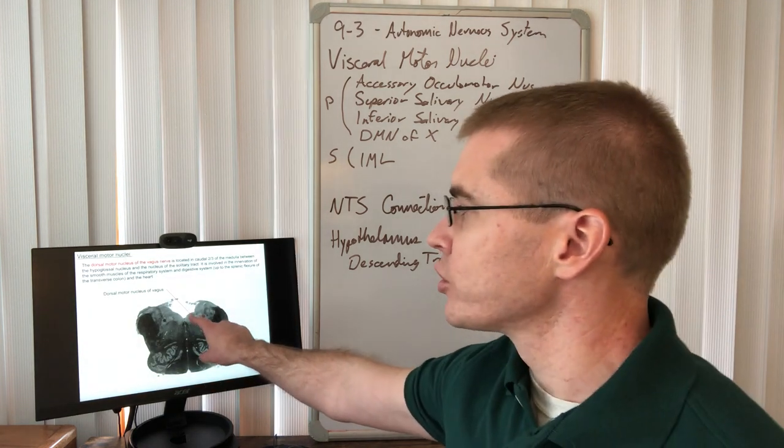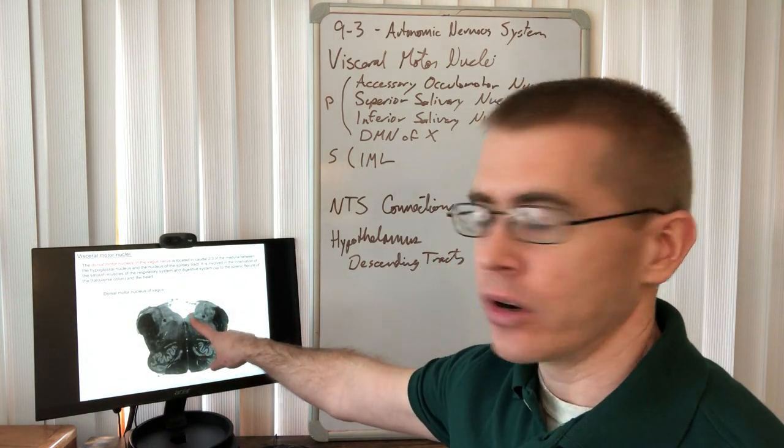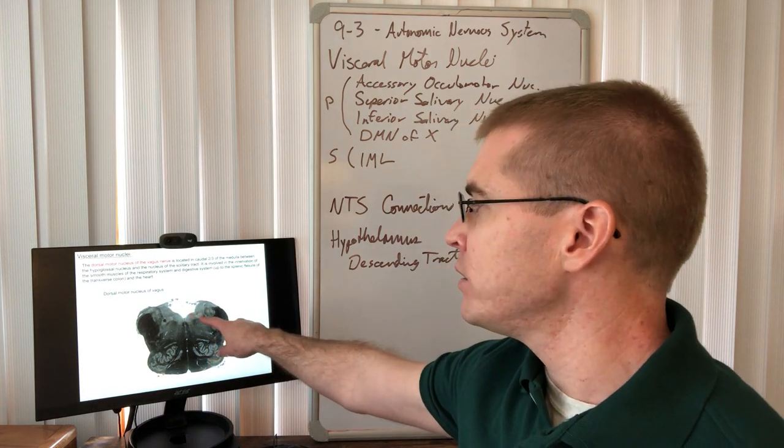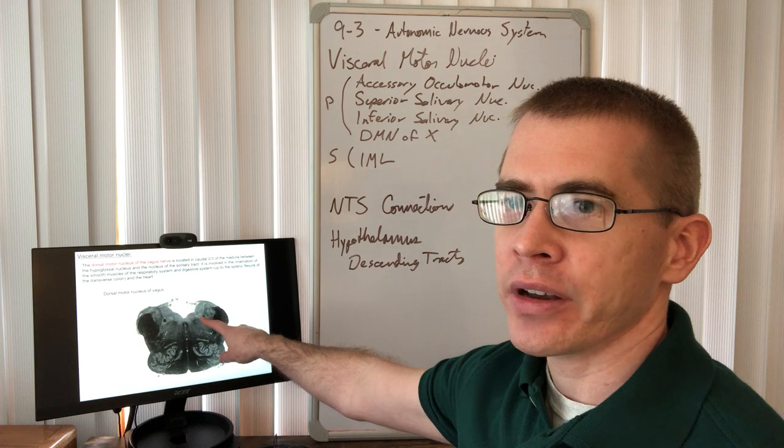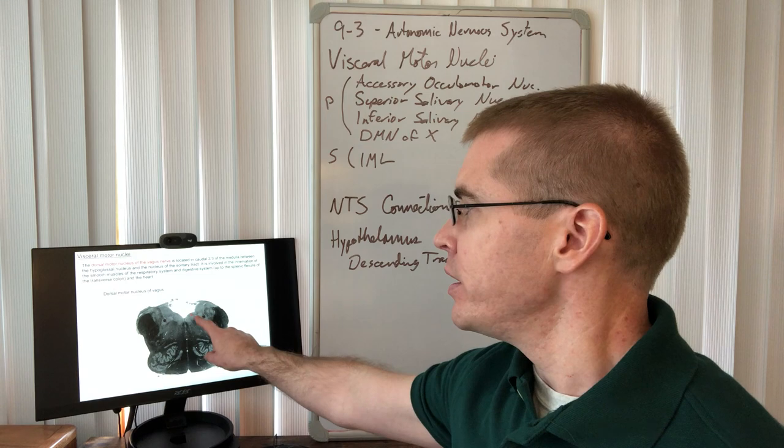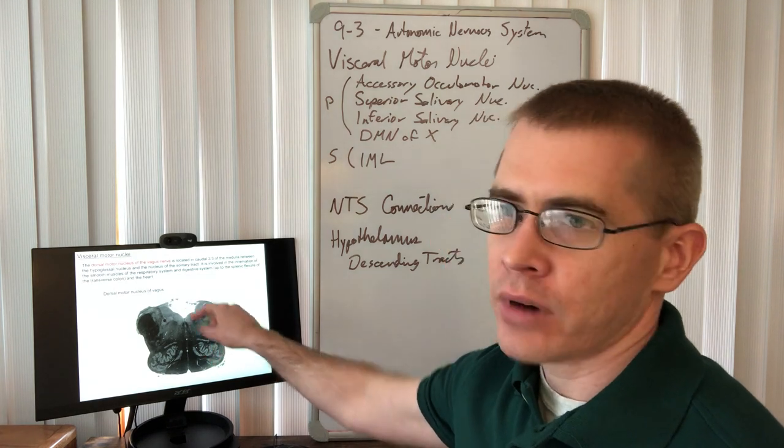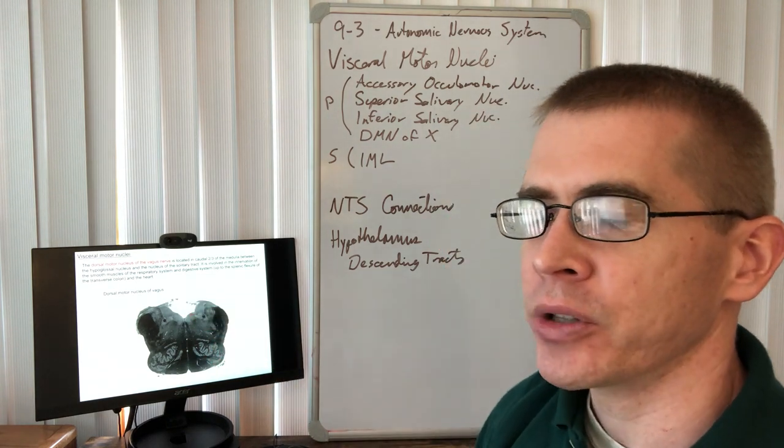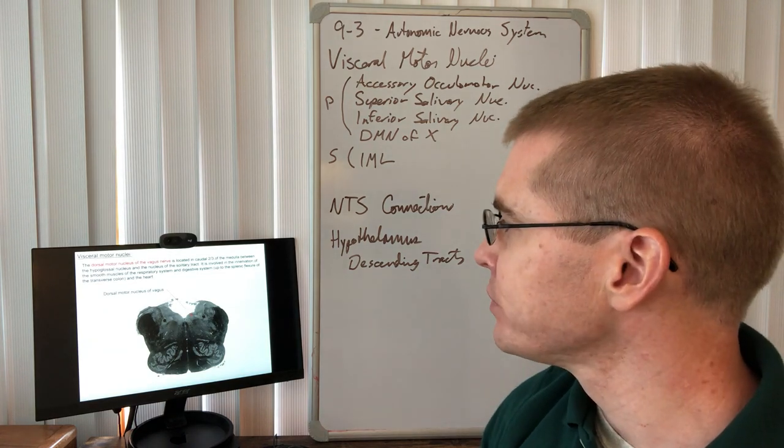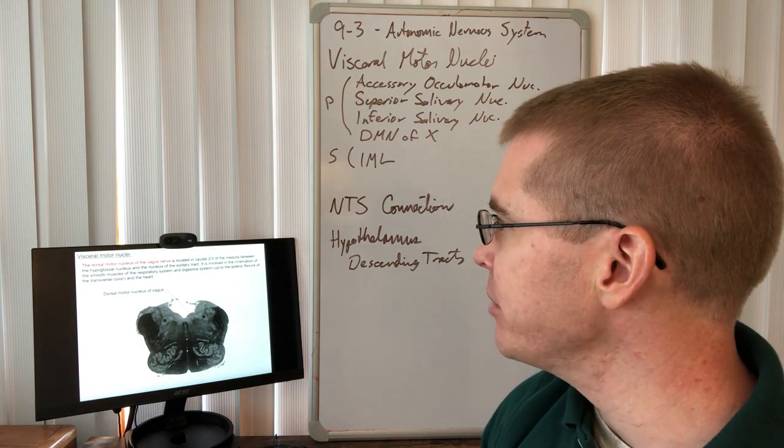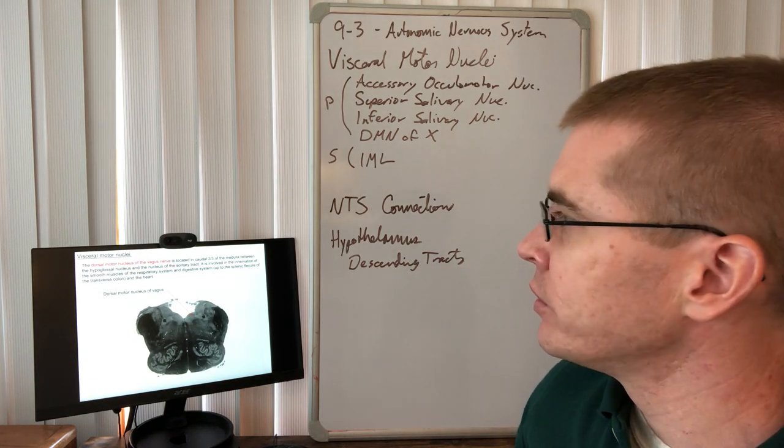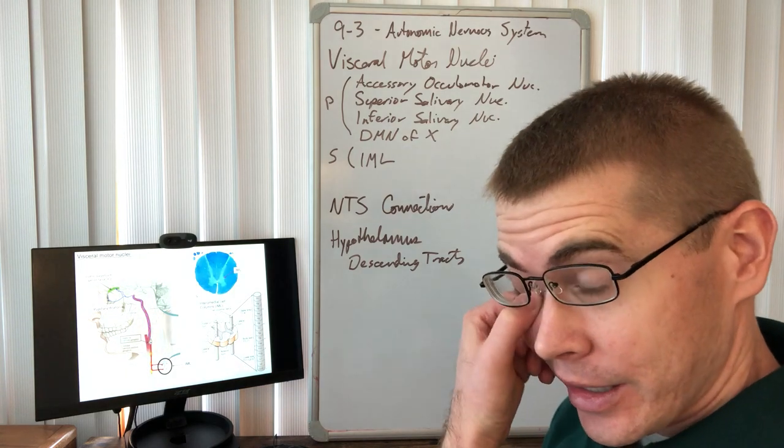Now we see here the dorsal motor nucleus of vagus nerve, nestled between hypoglossal nerve and the nucleus tractus solitarius. This little dot here is the tractus solitarius, the white matter, and then the gray matter around it, which is lighter in this picture. That is the nucleus of the tractus solitarius, hence its name. We are familiar with these nuclei.